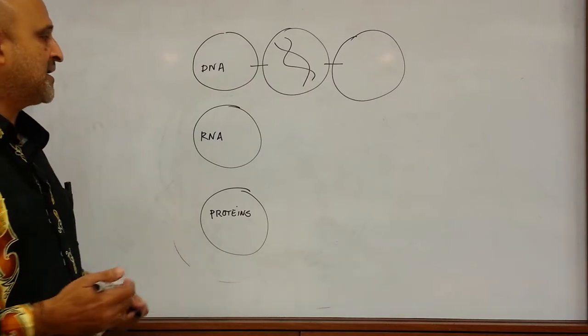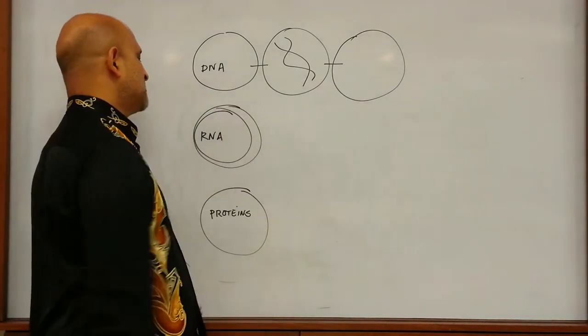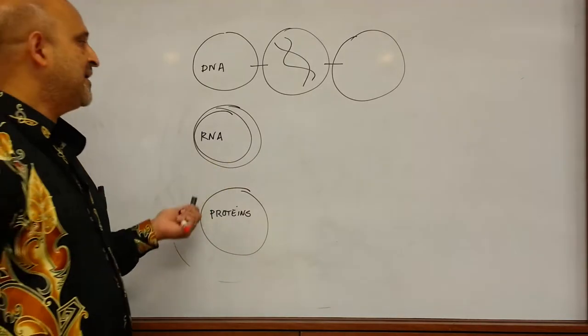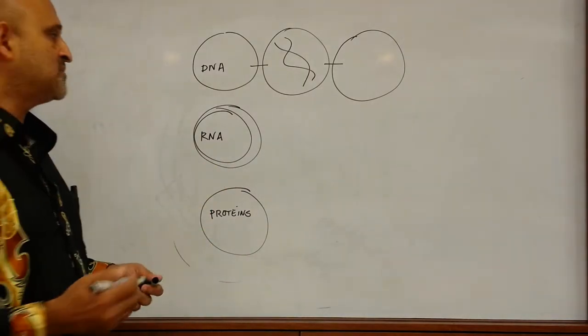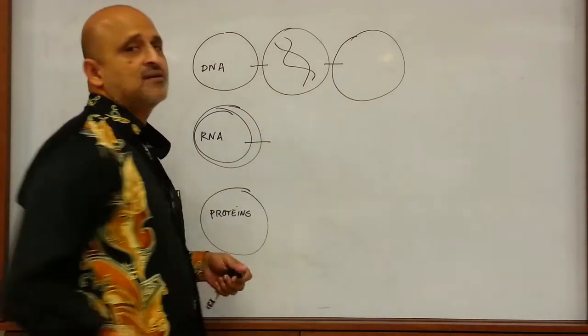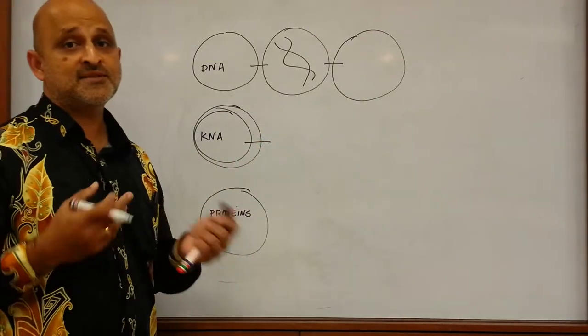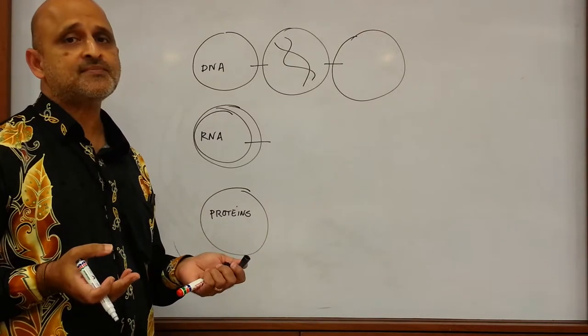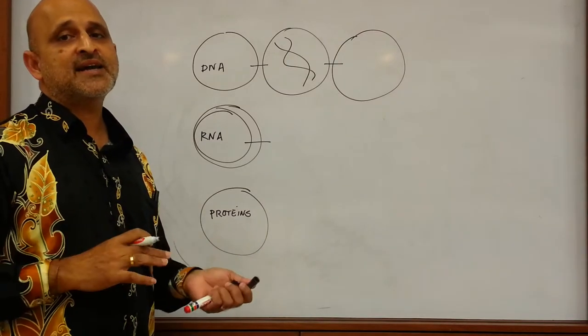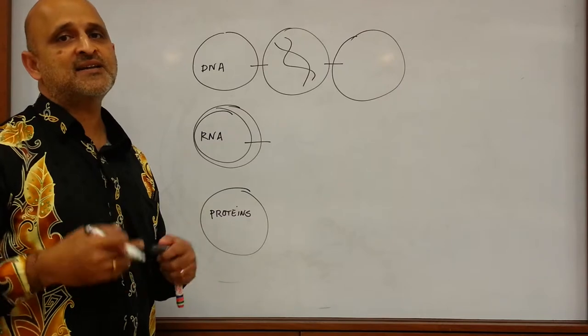Looking at RNA, which is ribonucleic acid, when we look at RNA we basically understand that RNA has different forms as well. In viruses we have single-stranded RNA viruses, double-stranded RNA viruses, and negatively and positively stranded RNA viruses.